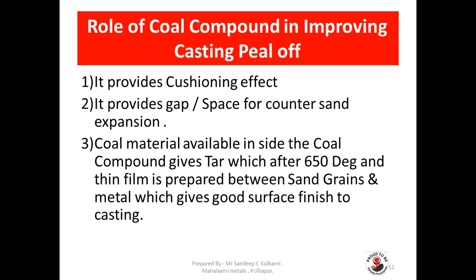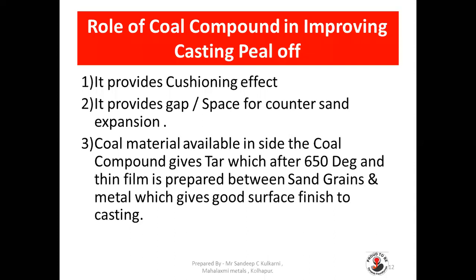Role of coal compound in improving casting fill-off: It provides a cushioning effect and provides gap or space to counter sand expansion. Coal material available inside the coal compound gives tar after 650 degrees, and a thin film is prepared between sand grains and metal which gives good surface finish to the casting.